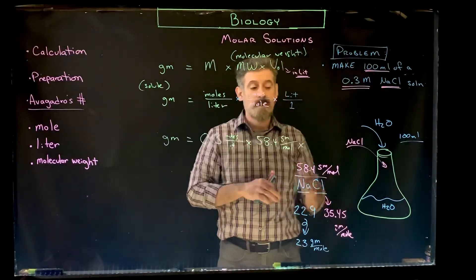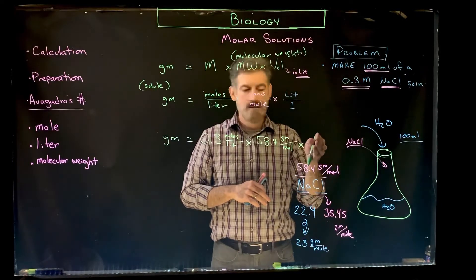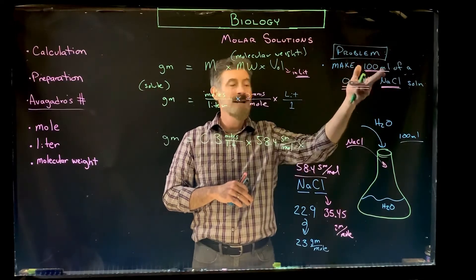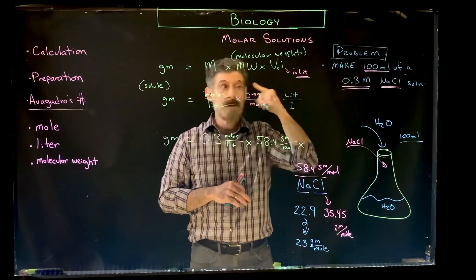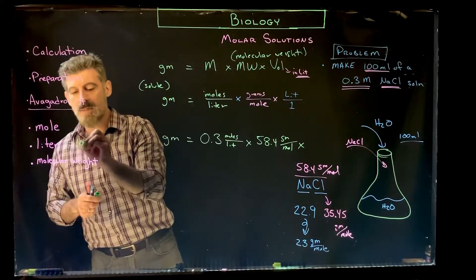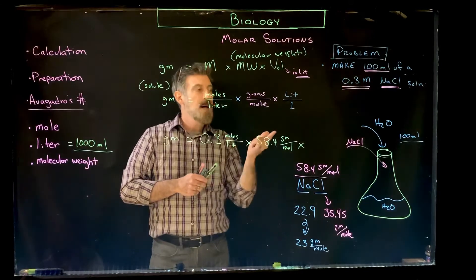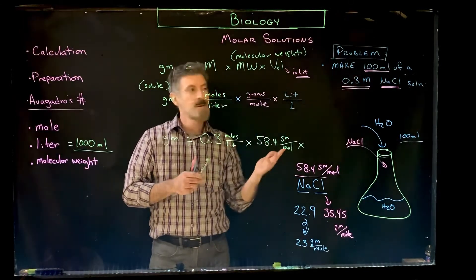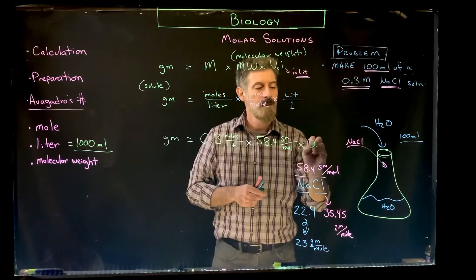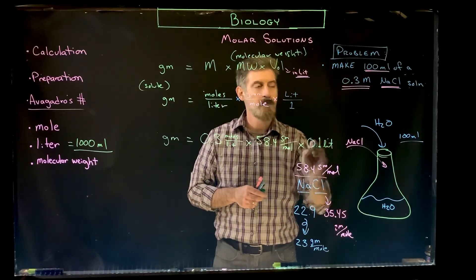And then we put in the volume, and the volume has to be in liters. We need 100 milliliters. So that's a stumbling place for a lot of students. Do you put in 100? You can't, because it says milliliters, not liters. So now we have to know this as well. A liter is going to be 1,000 milliliters. I only need 100, one-tenth of that. So all you're doing is moving the decimal place. So it's really 0.1 liters.